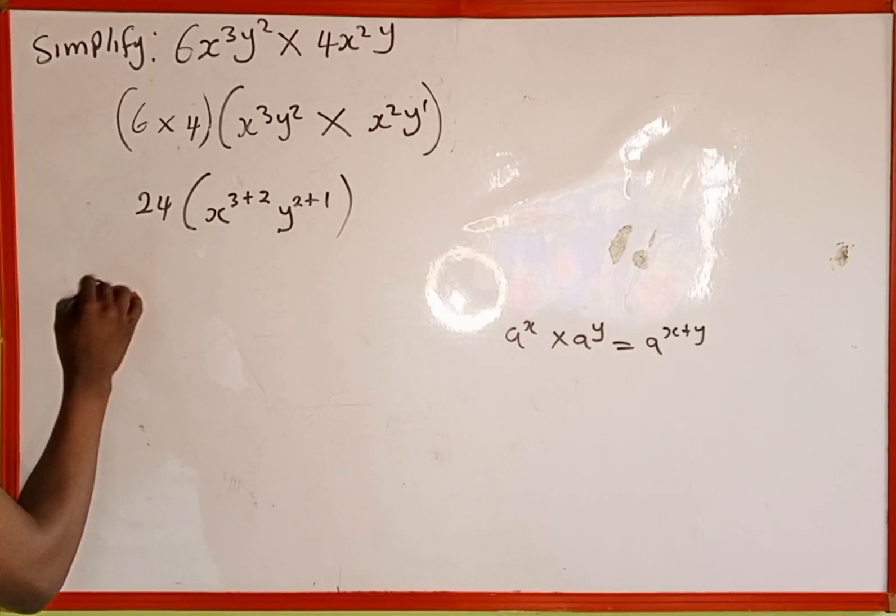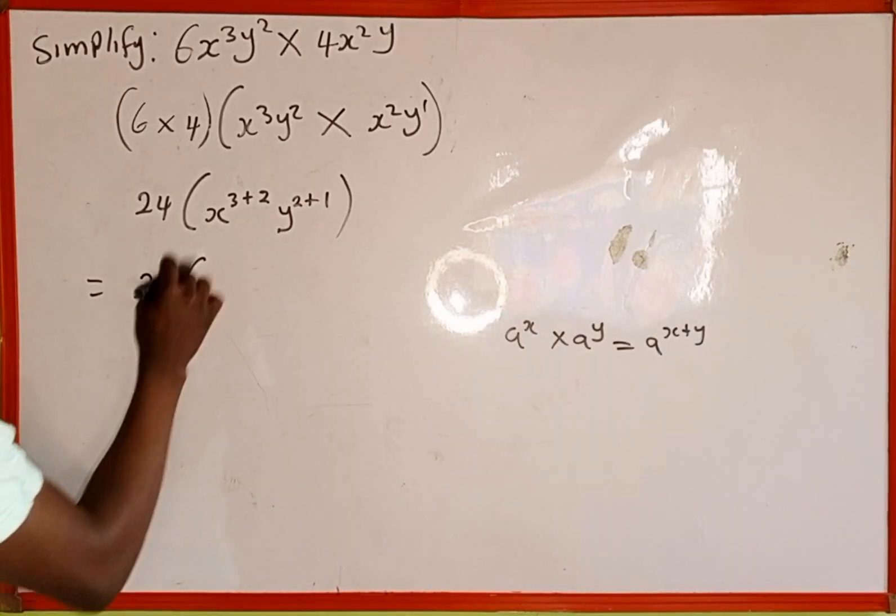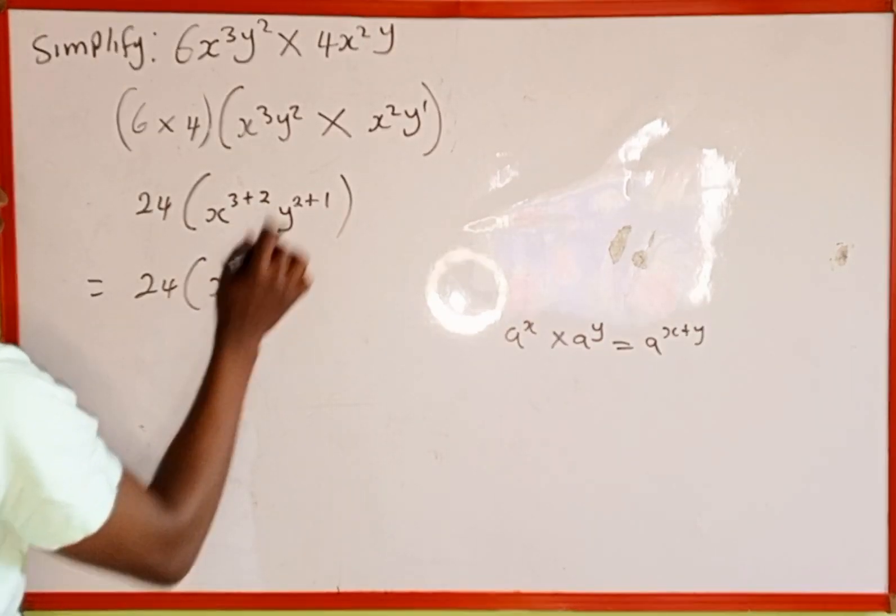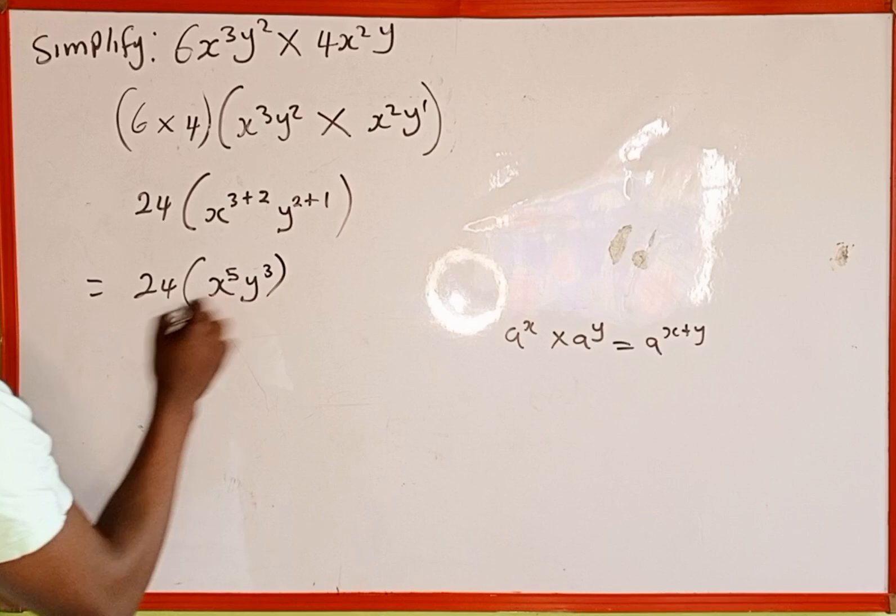This equals 24 times the bracket of x, where 3 + 2 = 5, and y, where 2 + 1 = 3.